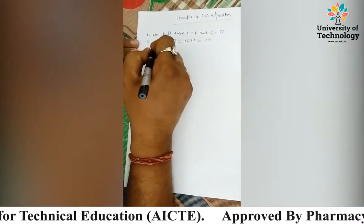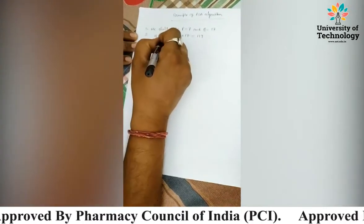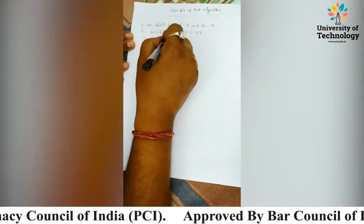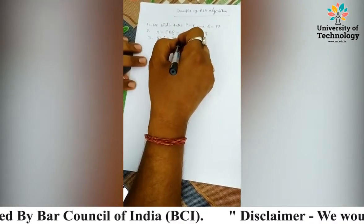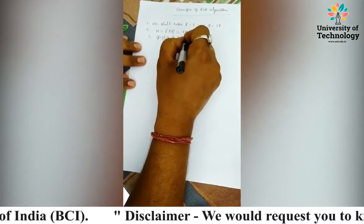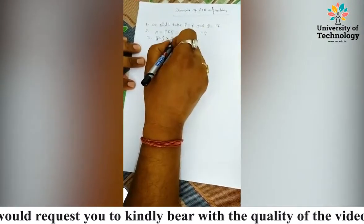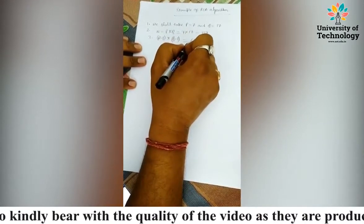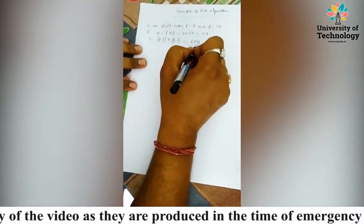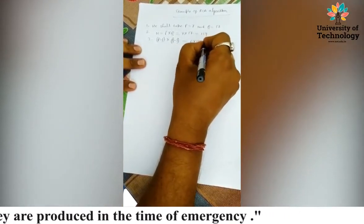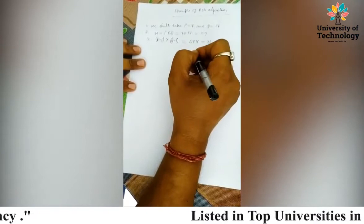Now in the third stage, we compute (P minus 1) multiplied by (Q minus 1). P is 7 so P minus 1 is 6; Q is 17 so Q minus 1 is 16. When we do the multiplication, that will be 96.